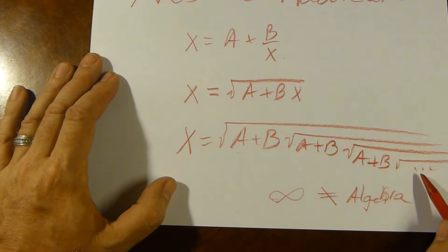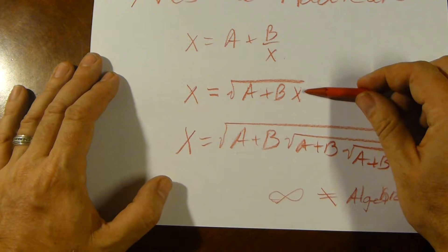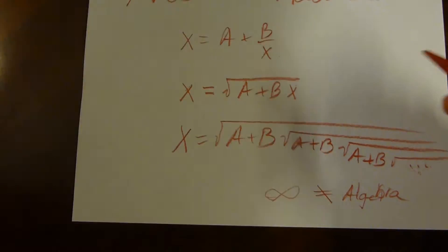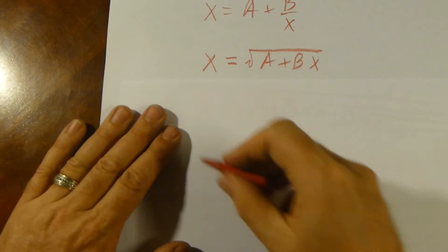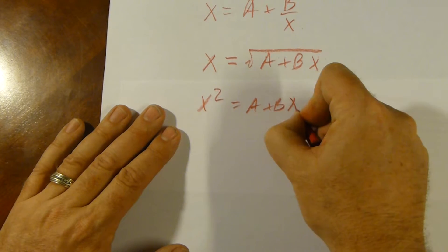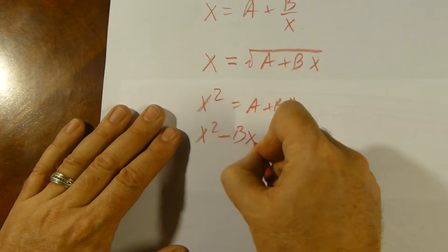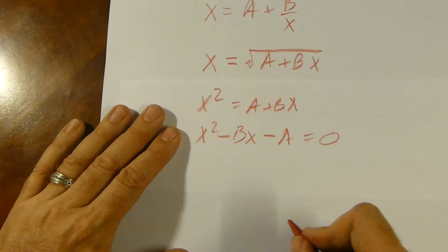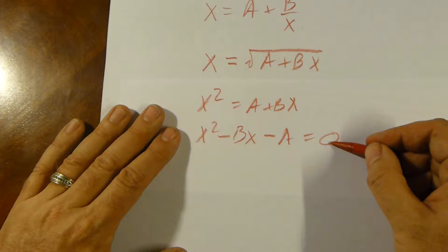In any case, continued radicals, nested radicals of this form, we can solve with this and solve very easily using the quadratic formula, which, of course, we all know and love. The way to solve that is very straightforward. We simply say, okay, x squared equals a plus bx, x squared minus bx minus a equals 0. Then we can solve this using quadratic formula using the method we've all learned in school.